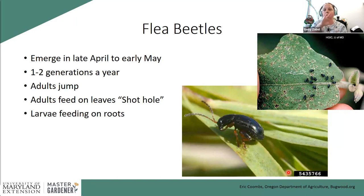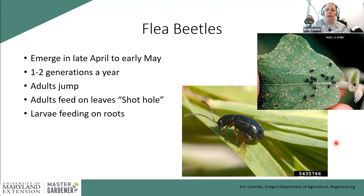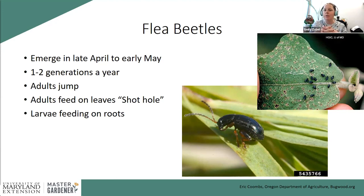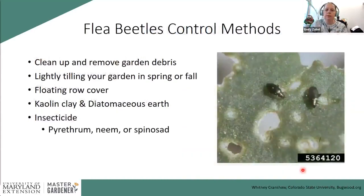Flea beetles get their name from the jumping legs on their adults. The larvae feed on plant roots, while adults cause what's called shotgun feeding damage — small scattered holes in leaves. You'll also find these on eggplants, though it's a different species from the one on brassicas; there's another species for corn and ornamentals, and they don't tend to cross over. On small transplants with only three leaves, this damage can be very detrimental.